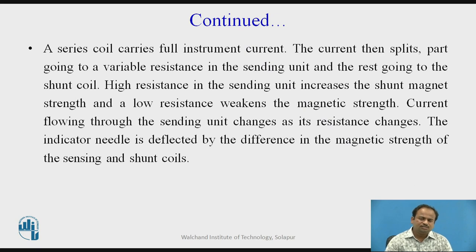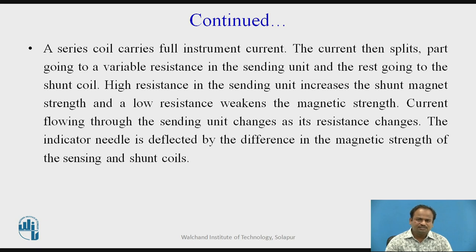How it works: a series coil carries full instrument current, then the current splits — part going to a variable resistance in the sending unit and the rest going to the shunt coil. Higher resistance in the sending unit increases the shunt magnet strength, and low resistance weakens the magnetic strength. Current flowing through the sending unit changes as its resistance changes. The indicator needle is deflected by the difference in the magnetic strength of the sensing and shunt coils.